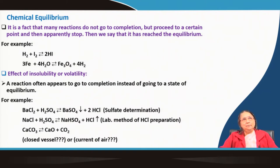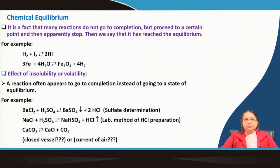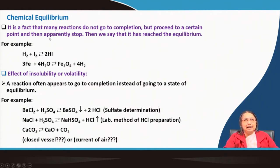For example, hydrogen gas reacts with iodine in vapor form to form hydroiodic acid. The reaction is shown here: hydrogen and iodine, both in vapor form, produce HI, hydroiodic acid, which is also in gas phase. So all species are in the gas phase.